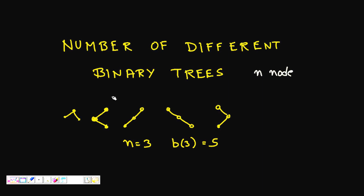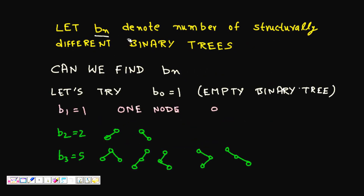For a simple example, we take n=3 nodes. With three nodes you can make structures like: one root with left and right child, all nodes going left, all going right, one right then left, and so on. So B3 = 5 — with three nodes you can have five different binary trees with different structures. This is our aim: to find the count for a generalized n number of nodes.